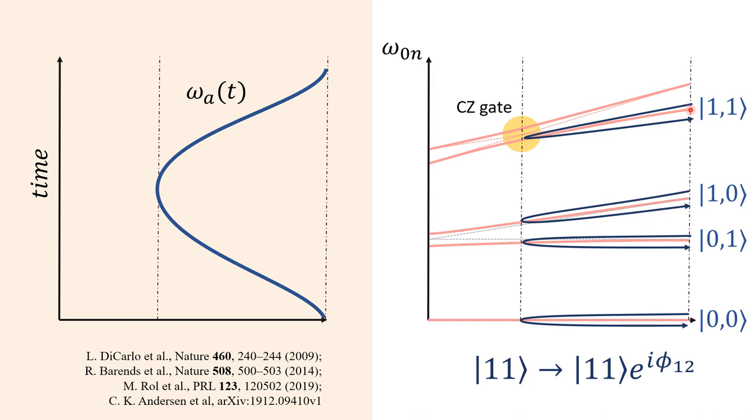To implement the phase gate, we start with one qubit highly detuned from the other one. We lower down the frequency of this qubit down to the crossing point and back. If the process is sufficiently adiabatic, the evolution is diagonal, and the eigenstates in the computational basis only acquire phases.